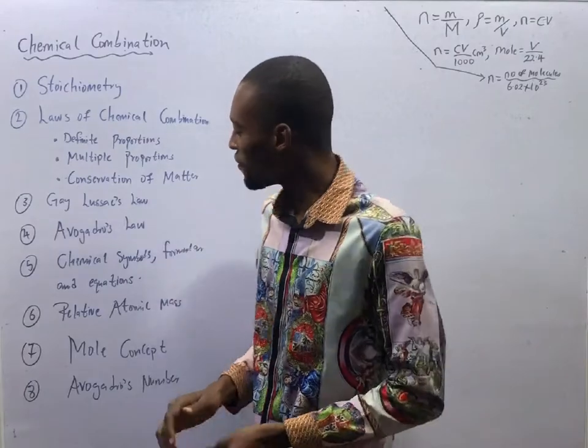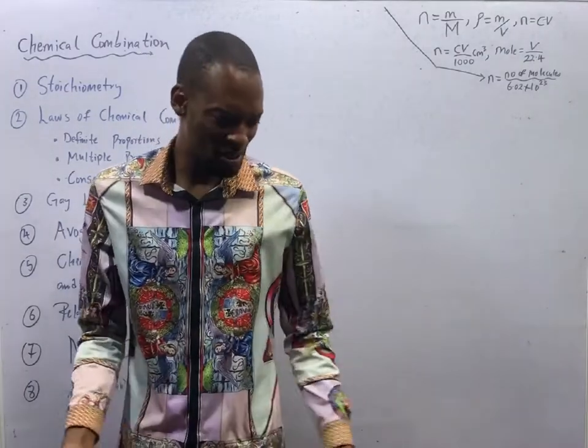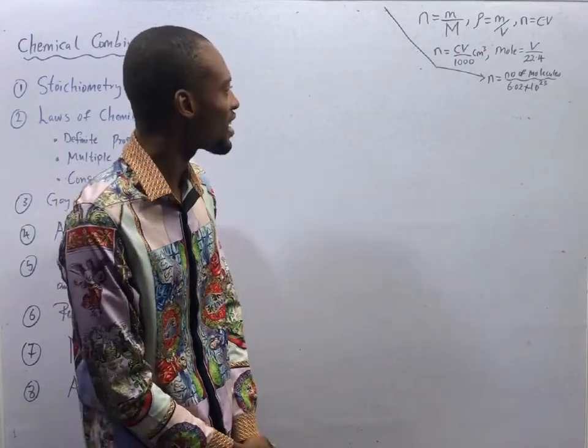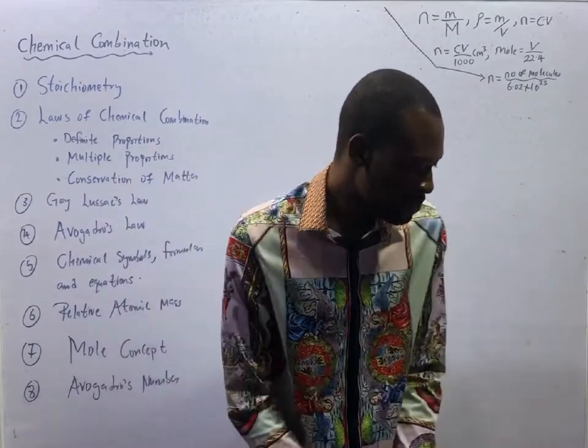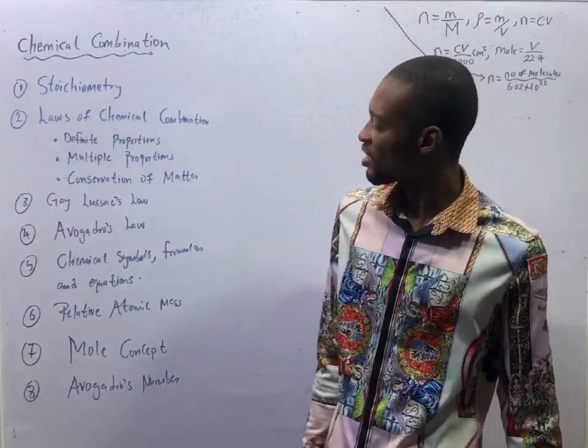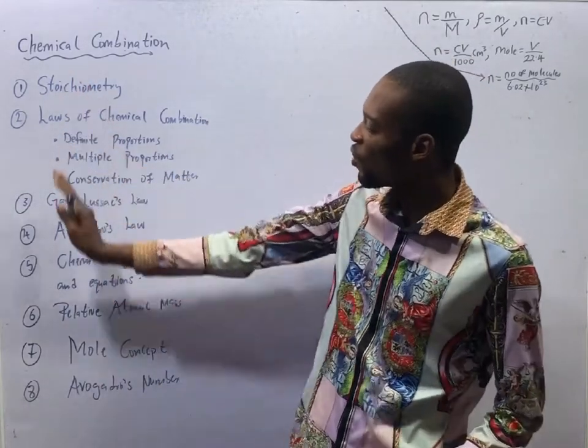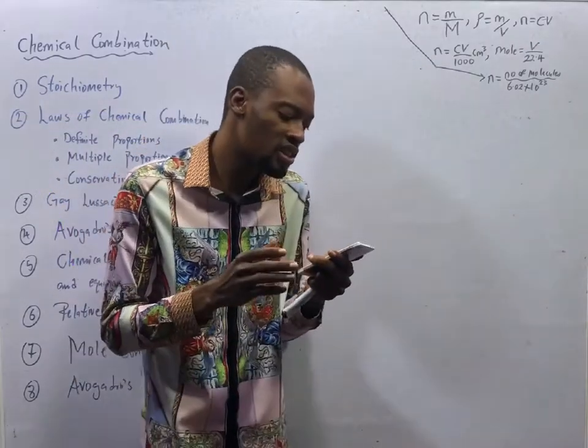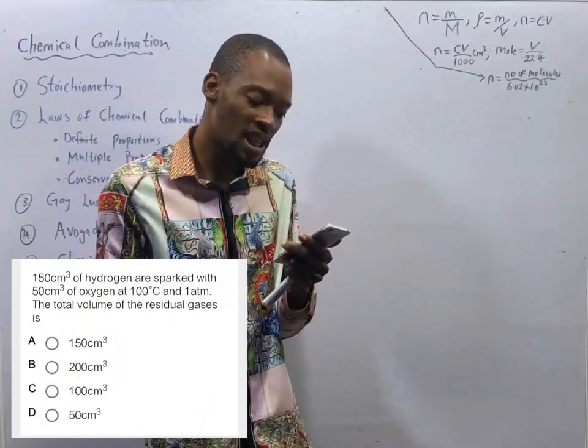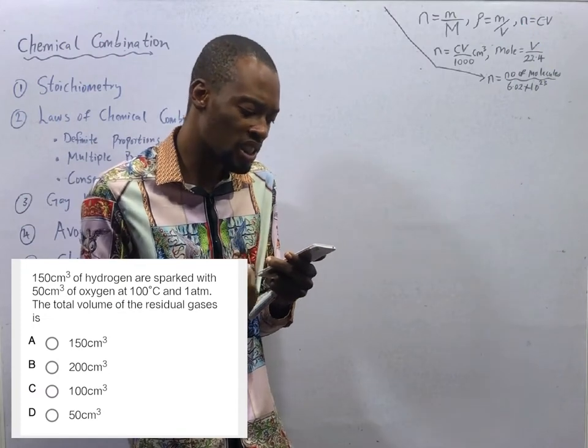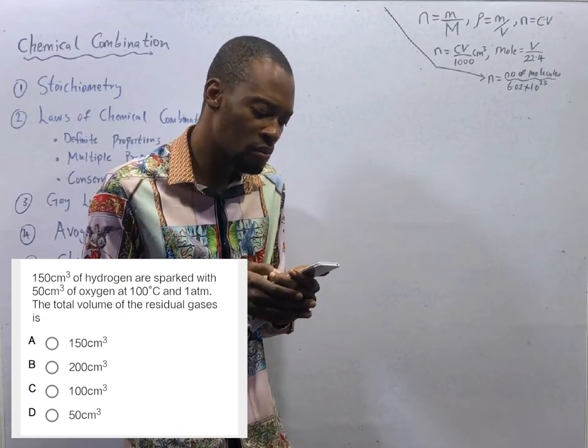Episode number 9 of the 120 Days to Jump Chemistry with Flash Isaac. In this episode, we are going strictly to questions under chemical combination. Volume of oxygen, 150 cm³. Volume of hydrogen, 150 cm³.